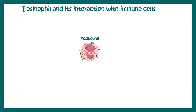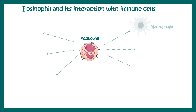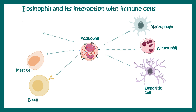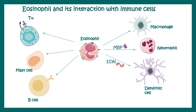Eosinophil has a huge role in immune modulation because it can interact with various immune cells such as macrophages, neutrophils, dendritic cells, B cells, mast cells, and Th2 cells. Eosinophil-derived factors such as MBP can modulate and activate neutrophils to secrete several other substances, and can also modulate dendritic cells leading to their activation. This function goes beyond fighting parasites or involvement in allergy, and has bigger implications in terms of overall biology.